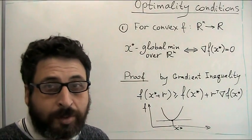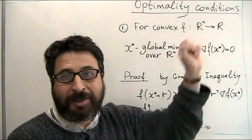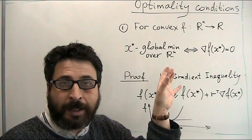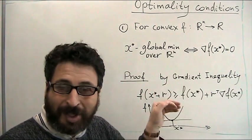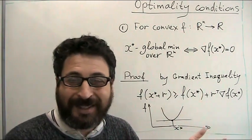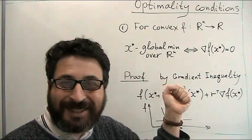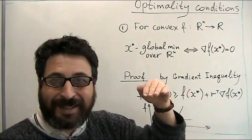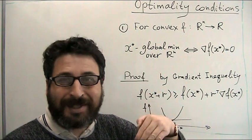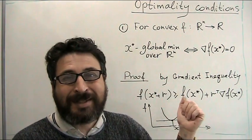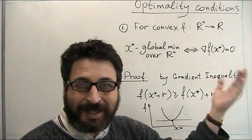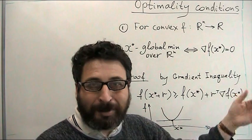Now we are ready to consider optimality conditions — about the gradient and possibly the Hessian. If we know that point x is optimal, what can we say about the gradient? And conversely, if we know something special about the gradient and Hessian, can we say the point is optimal? These are necessary conditions and sufficient conditions.